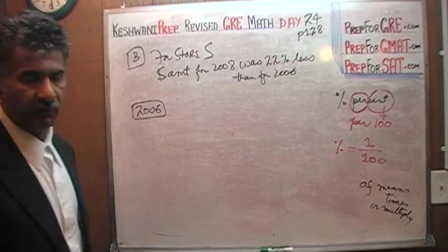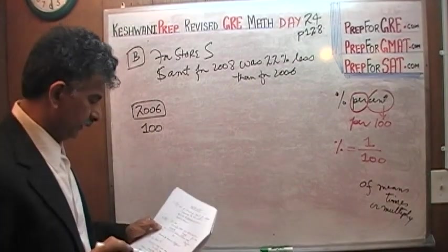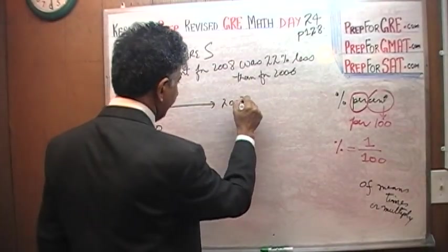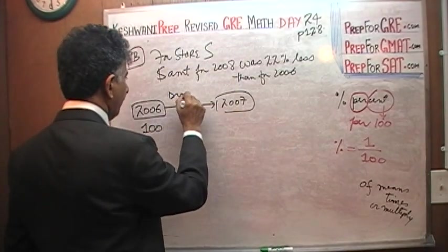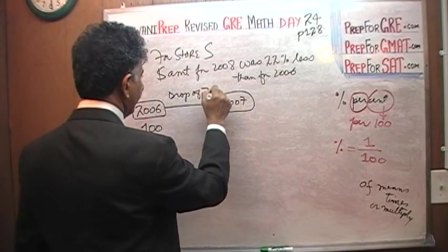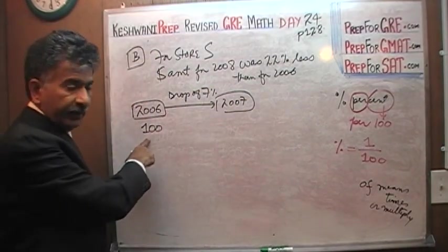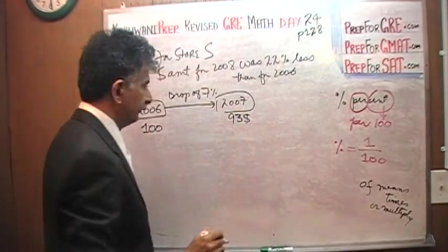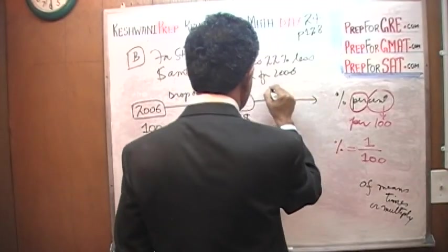Since no dollar figures are given, we are just going to pretend it is $100 so that we have a base to start out with. And then we are told that from 2006 to 2007 we have a drop of 7%, drop of 7%. Well, if you have a drop of 7% and if you started out with $100, in 2007 we will end up with $93. Then what happens? Then we have a drop of 15%.